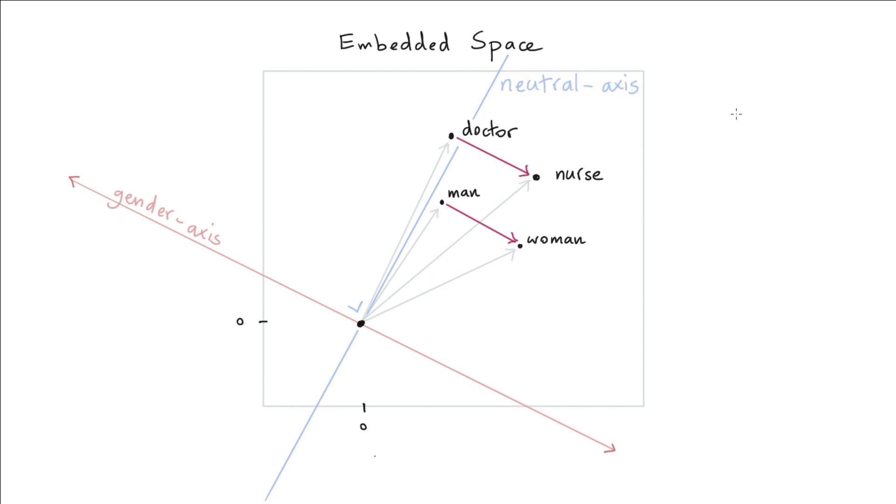And theoretically, you might argue that neutral axis should have no information about gender. The blue line is going through the origin. And that means that the gender axis value for the blue line is zero everywhere on that blue line. So what I can just go ahead and do is I can project all of my words onto that neutral axis.